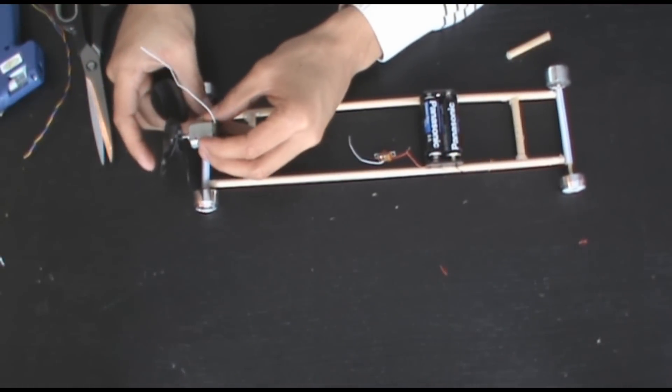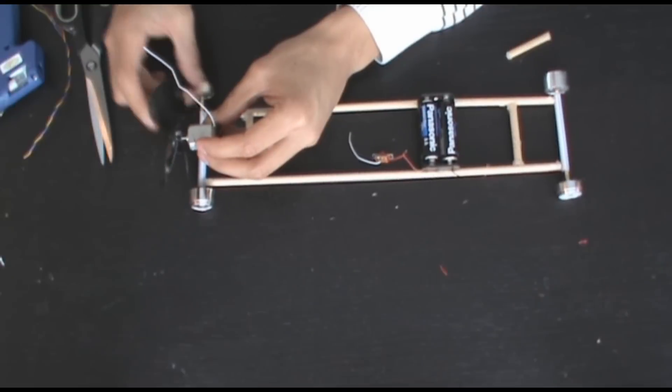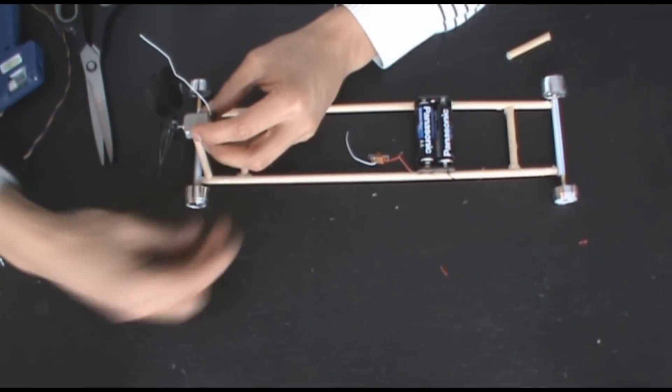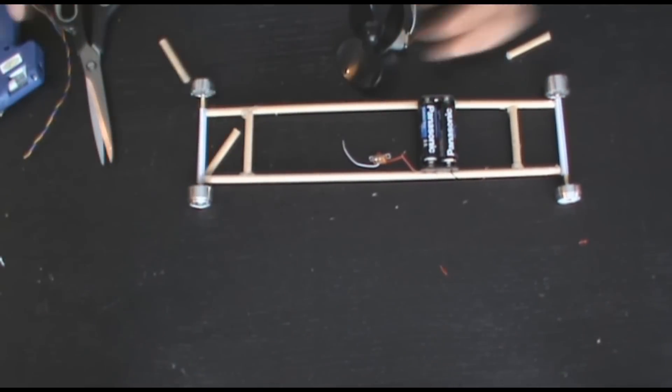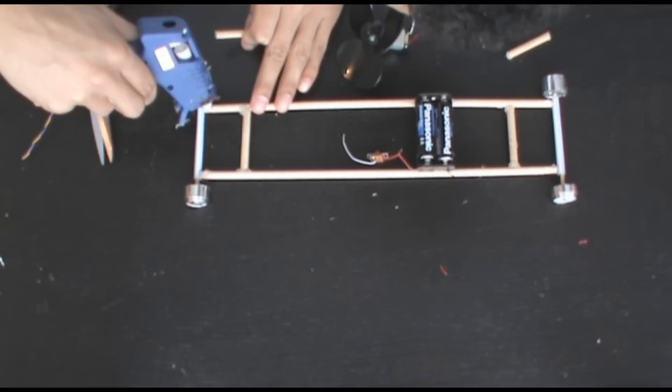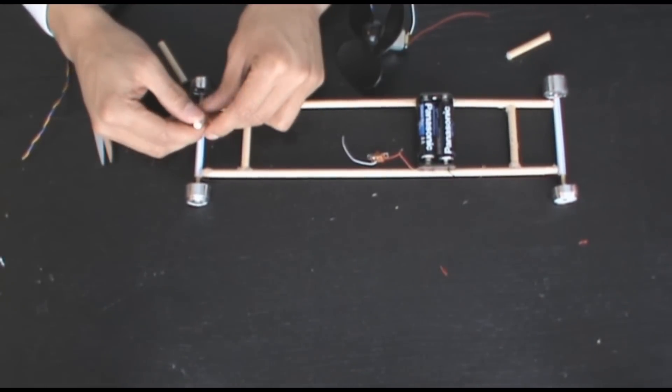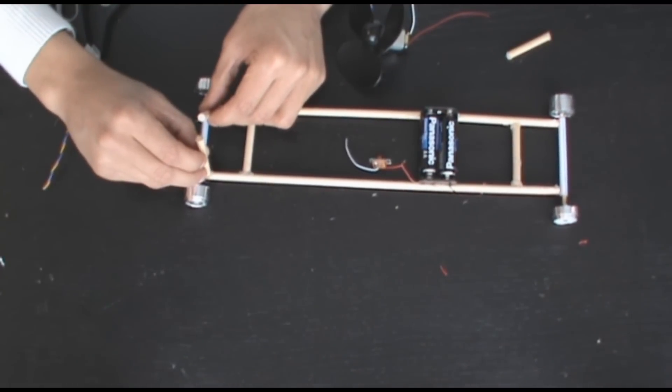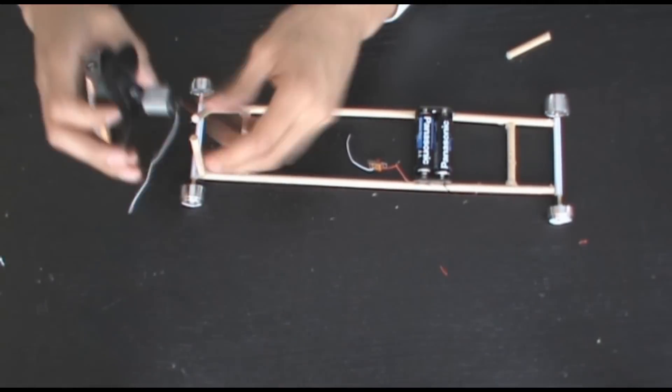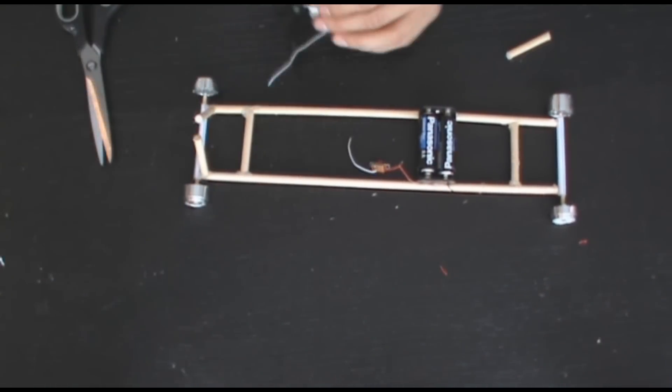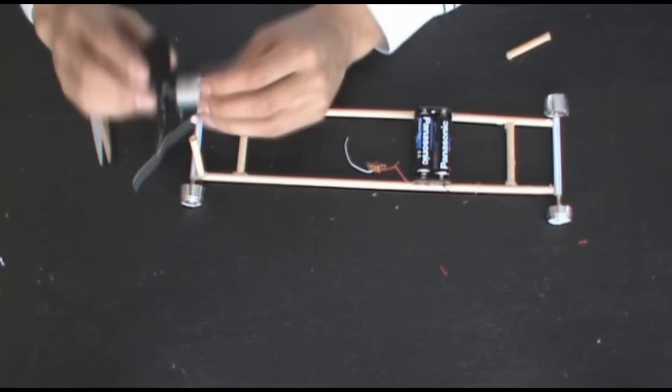And now we're going to start building the stand for the propeller. Now using dowels we're just going to create a little base and put the motor up there on top of the little platform we've made.